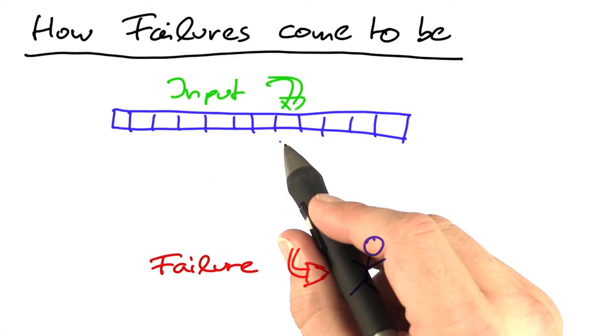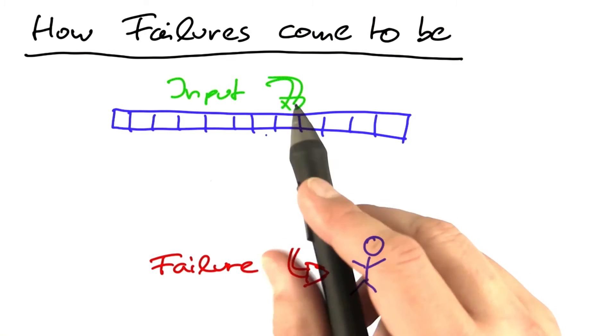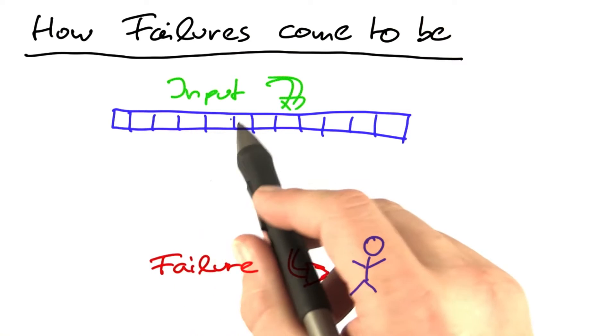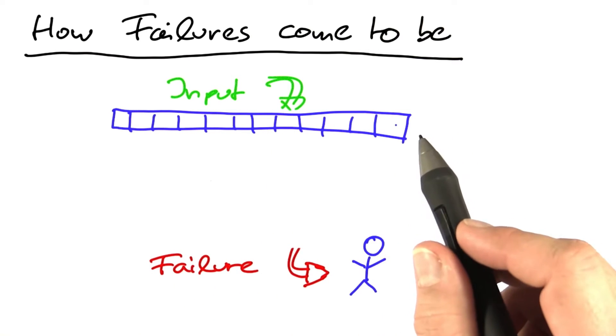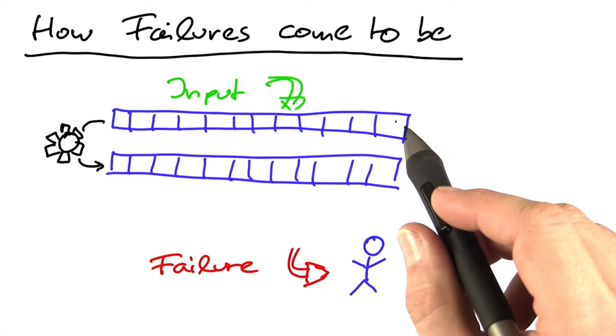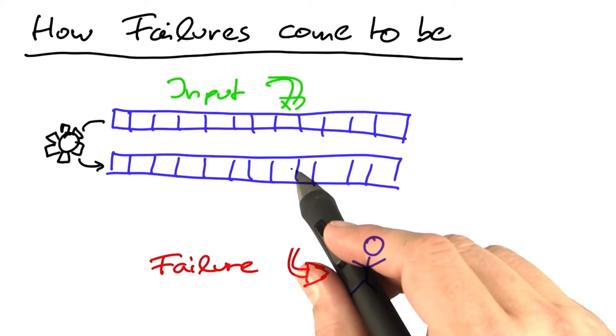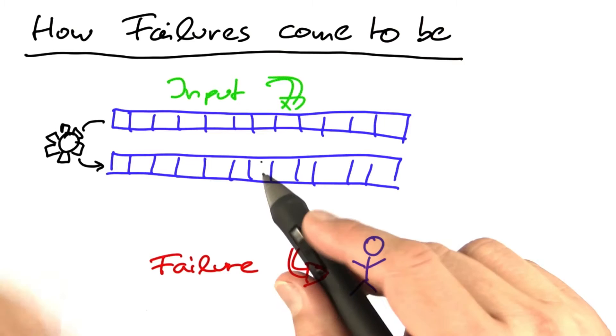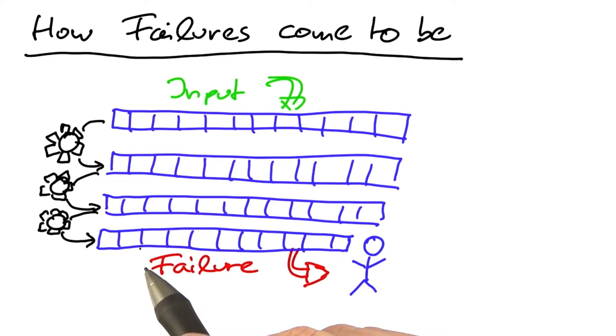We can see a program as a succession of program states. Each program state consists of several variables with values. As a program executes, it processes these states and transforms them into new states, for instance by reading variables and writing variables. This is the normal mode of operation.